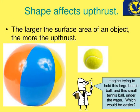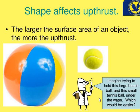Next, shape affects up thrust. The shape of an object also depends on the up thrust force. The larger the surface area of the object, the more the up thrust force. If you have two balls, the one with more area will have more up thrust force. Imagine trying to hold a large beach ball and a small tennis ball under water — which would be easier to hold down? The larger ball has more up thrust force.